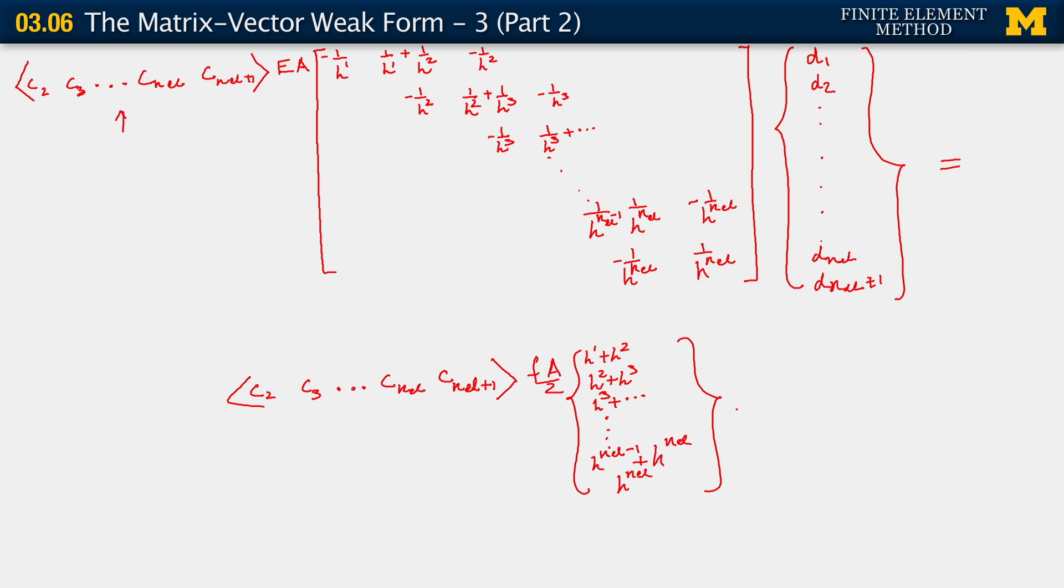We have this, and then we have the final contribution coming from the traction. Again, we have C 2, C 3, C n e l, C n e l plus 1. Multiplying the vector with 0s everywhere, all the way down to T a.